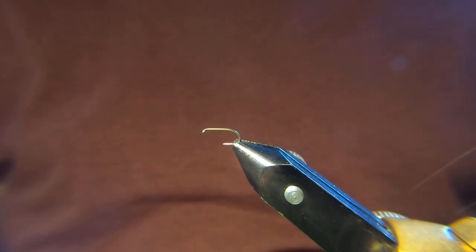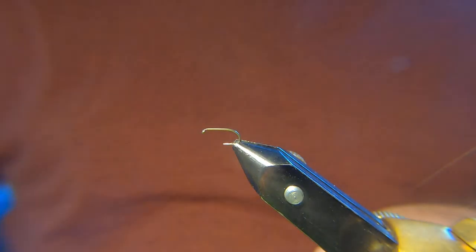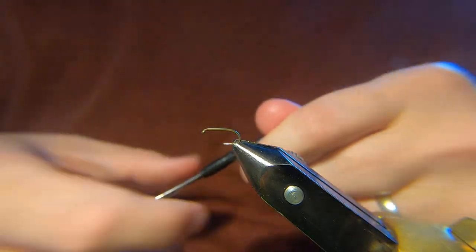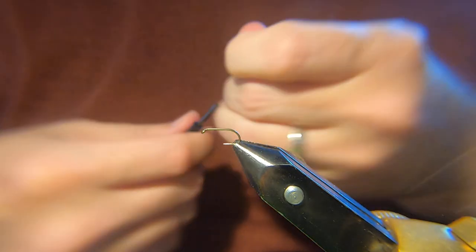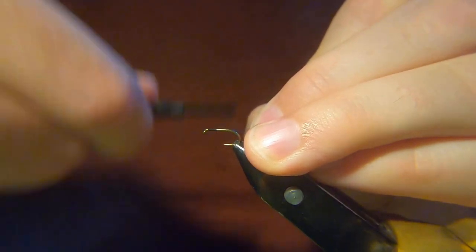Hi guys, welcome back. On the vise I've got a Kamasan B175 size 14, and for the thread I'm going to use a Sheer 14-0 black. I'm going to be tying the Griffith's Gnat, or a variation of it. I'll just run down a quick layer of thread.